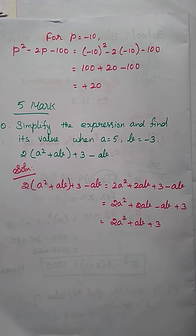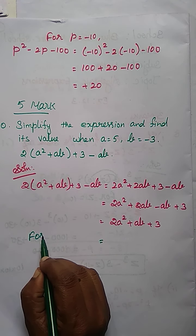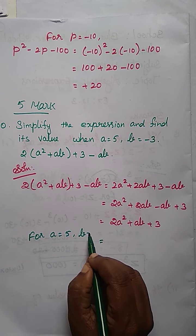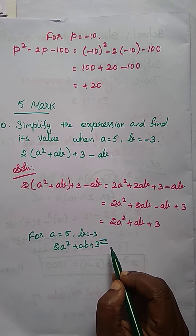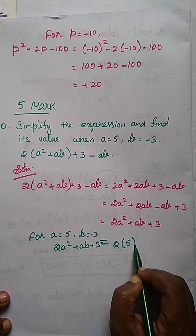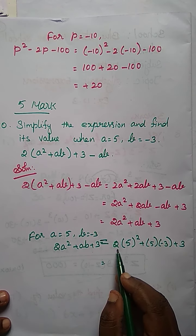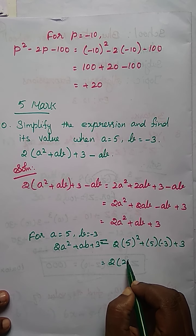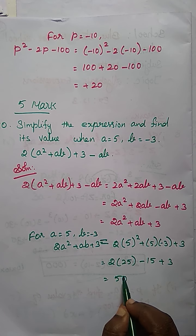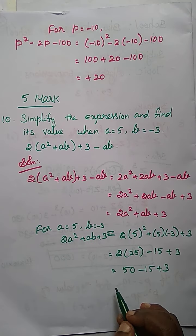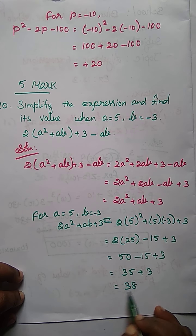Now we substitute. For A is equal to 5, B equal to minus 3. Write the expression: 2A square plus AB plus 3. Substitute: 2 into 5 square plus 5 into minus 3 plus 3. 2 into 25 plus into minus minus 15 plus 3. Now 2 into 25 is 50, minus 15 plus 3. That equals 50 minus 15 is 35, plus 3 is 38. That is equal to 38 is the answer.